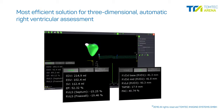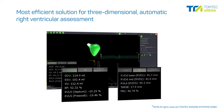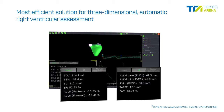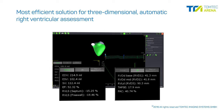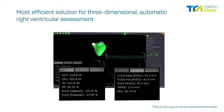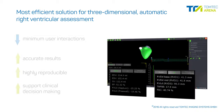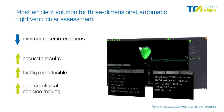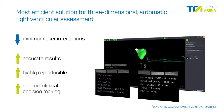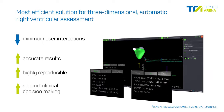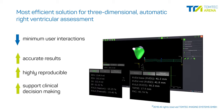4D RV Function is the most efficient solution for three-dimensional automatic right ventricular assessment. With minimum user interactions, results are accurate, highly reproducible, and support your clinical decision-making process.